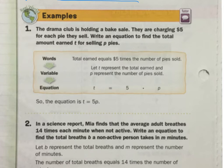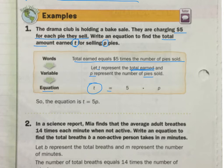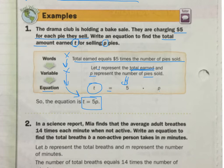We have a drama club holding a bake sale. They're charging $5 for each pie they sell. Write an equation to find the total amount earned, T, for selling P pies. We start with words: total earned equals five times the number of pies sold. Then variables: T equals the total earned, P represents the pies sold. So the equation is T equals 5 times P. You took it from words, picked some variables, and wrote the equation.